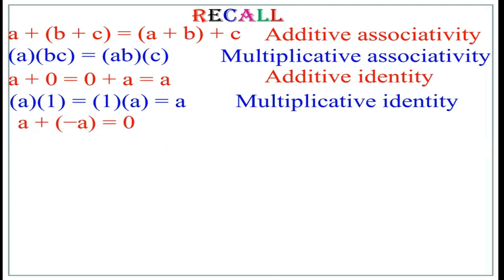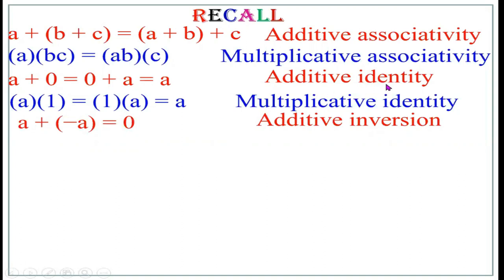A plus (minus A) equals 0. We know 5 plus (minus 5) is 0, 8 plus (minus 8) is 0. This is known as additive inverse — minus A is the inverse of A. Whenever you add two numbers and get the identity 0, those numbers are inverse to each other. Inverse of A is minus A; inverse of minus A is A. Since we use the operation plus, it is called additive inverse.